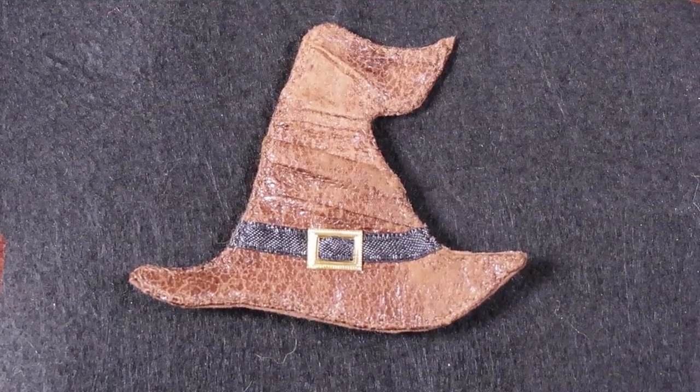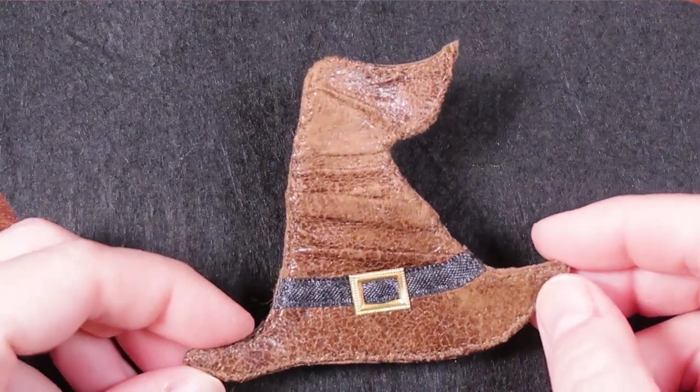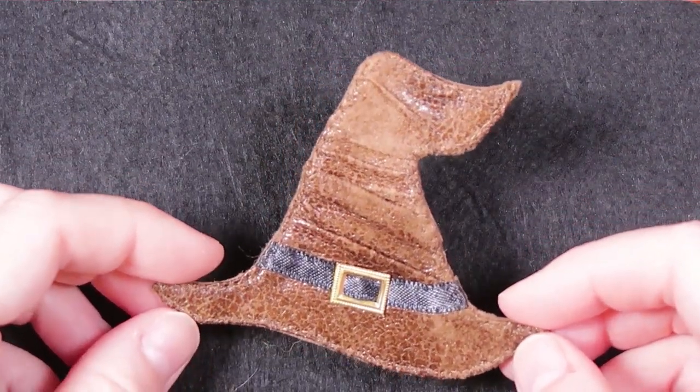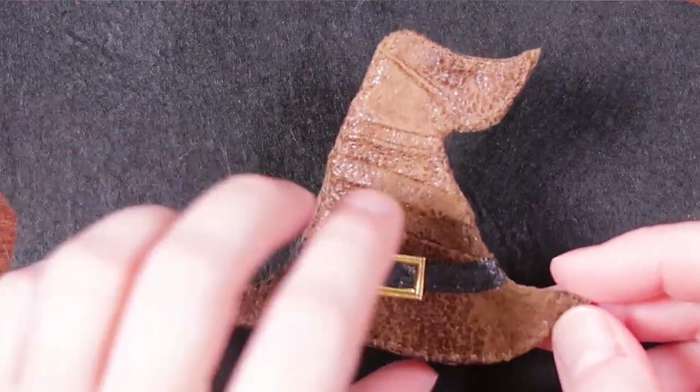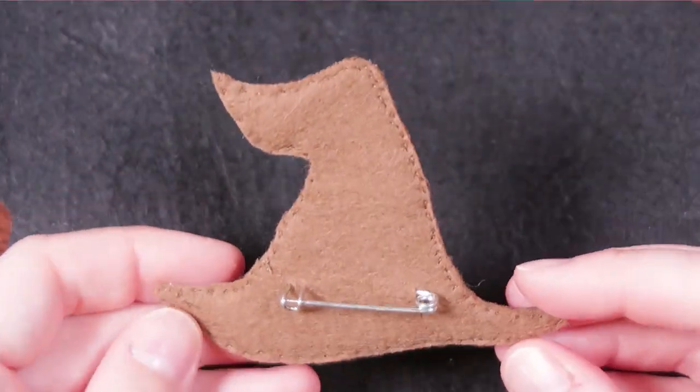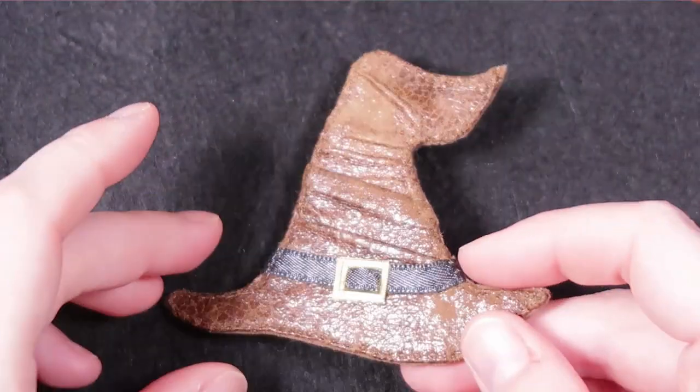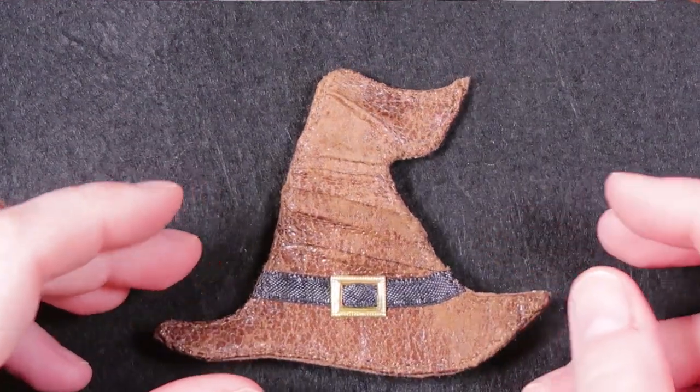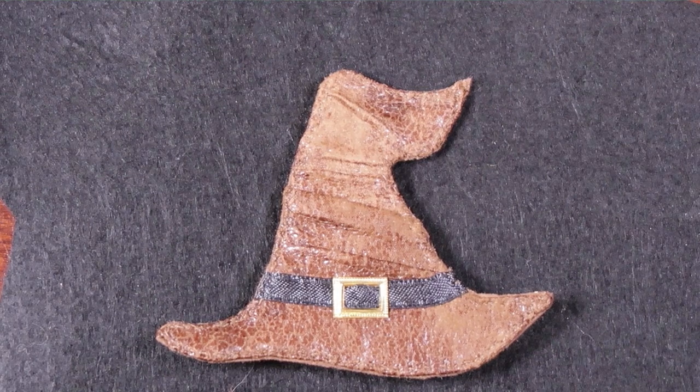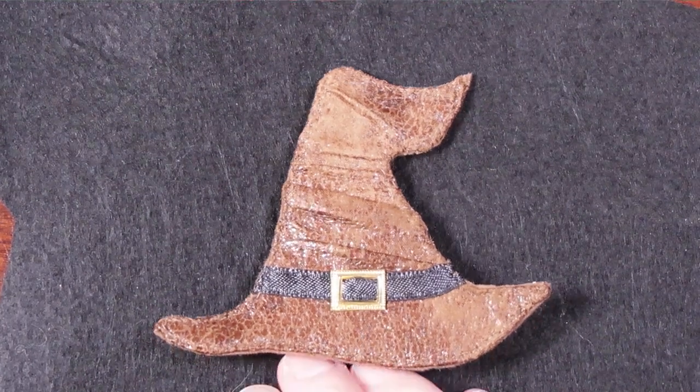And that is it! A completed witch's hat pin, brooch, button, whatever name you prefer. I really liked how this turned out, and it was a lot of fun to make. I really like how it looks like it's slouching in the front, because of the way the fabric was laid on top of the felt.